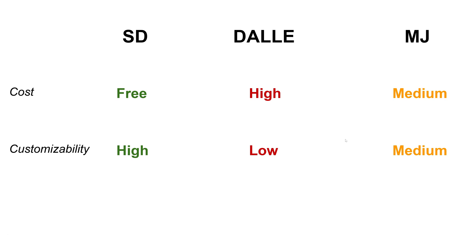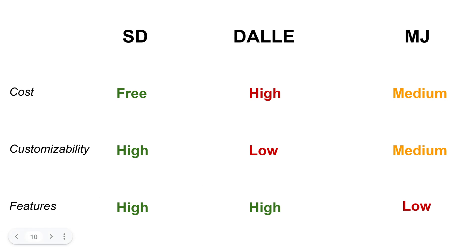In terms of features, Stable Diffusion is obviously going to be insanely high — you can play around with different latent inputs, do interpolation, and do image-to-image translation or image modification. DALL-E also has strong features — with its outpainting, you can remove specific parts of an image and ask DALL-E to fill it in. Midjourney doesn't have any of those features, so I would say it's low on features available right now, though it will probably be added in the future.